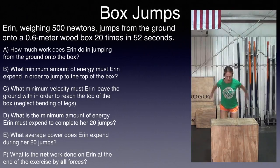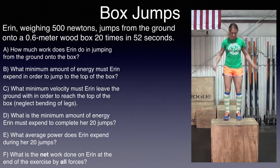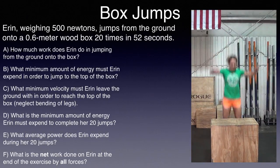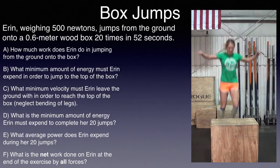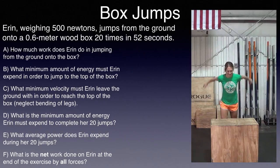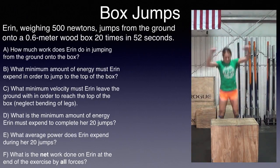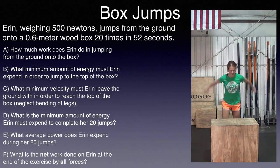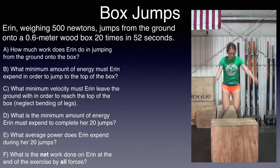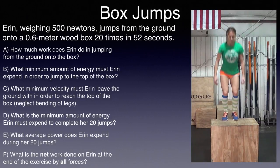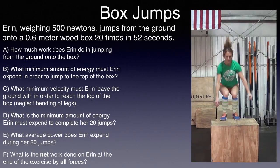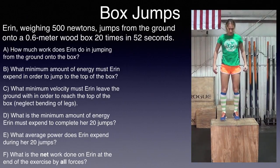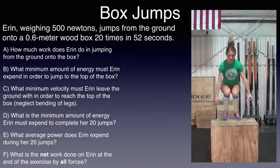Aaron, weighing 500 newtons, jumps from the ground onto a 0.6 meter wood box 20 times in 52 seconds. A. How much work does Aaron do when jumping from the ground onto the box? B. What minimum amount of energy must Aaron expend in order to jump to the top of the box? C. What minimum velocity must Aaron leave the ground with in order to reach the top of the box? Neglect bending of legs. D. What is the minimum amount of energy Aaron must expend to complete her 20 jumps? E. What average power does Aaron expend during her 20 jumps? And finally, F. What is the net work done on Aaron at the end of the exercise by all forces?